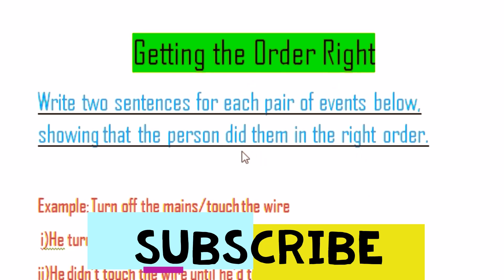This question can be asked in this way: write two sentences for each pair of events below, showing that the person did them in the right order. You can be asked to write option A or option B, as given in the example.